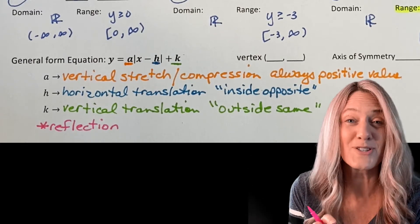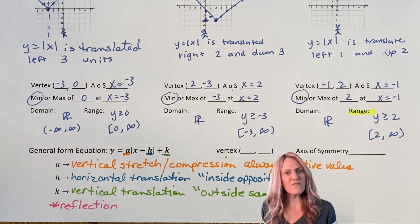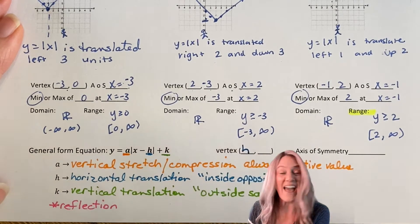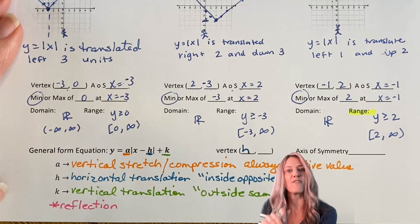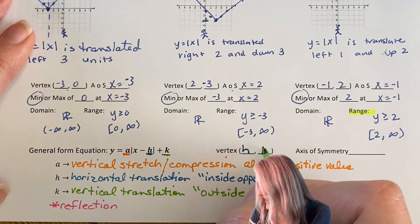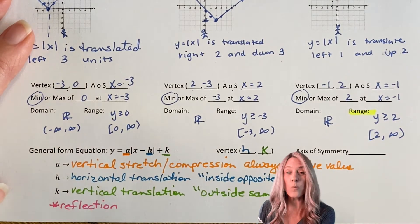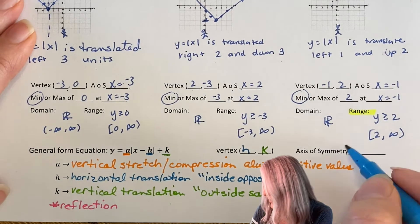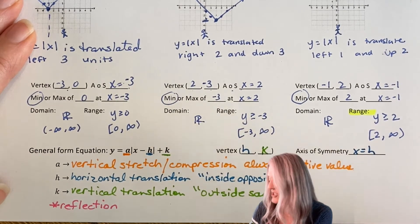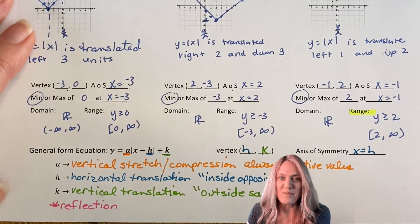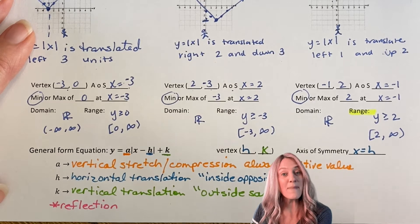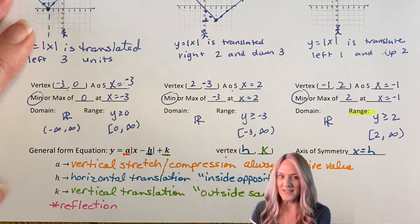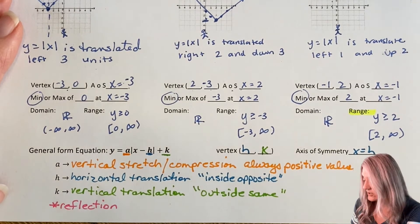Another connection we can make: what's our vertex? Just looking at that equation, h is our horizontal translation, and that gives us the x-coordinate of our vertex. K ends up being our vertical translation, giving us the y-coordinate of the vertex. The axis of symmetry is always at that x-coordinate of the vertex, so x equals h. We also know from the vertex the min and max value, which comes from the y-coordinate.